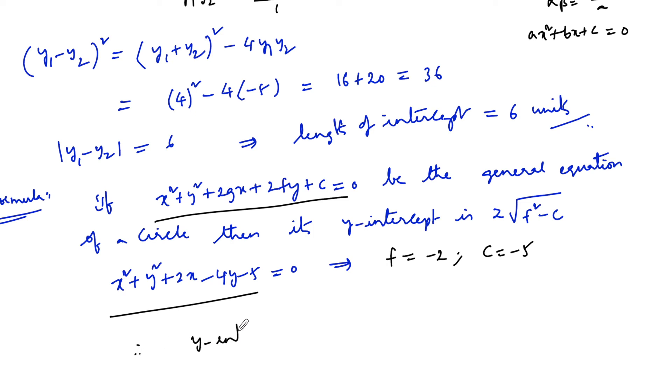Therefore we can write y-intercept = 2√(f² - c), that is 2√(4 + 5), that is 2√9. √9 is 3, so 2 × 3 = 6 units.